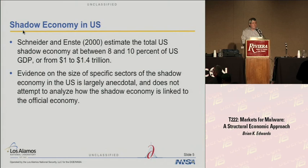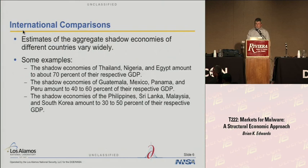The evidence we have on this is largely anecdotal. The official measuring done in the federal government captures some of the unofficial activity, but doesn't really capture all of it. As for international comparisons, we have some pretty wide variances across countries. Thailand, Nigeria, and Egypt are estimated to be about 70% of their respective GDPs. Guatemala, Mexico, and Peru are 40 to 60%. The Philippines, Sri Lanka, and others are a little smaller.